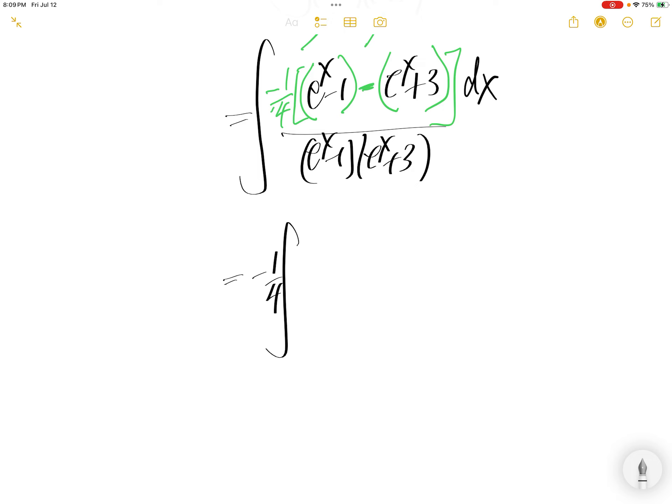And then you have e to the power x minus 1 divided by e to the power x minus 1 times e to the power x plus 3. e to the power x minus 1 cancel, you get 1 over e to the power x plus 3.